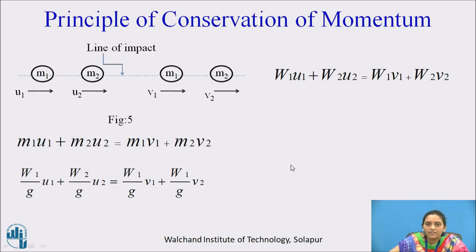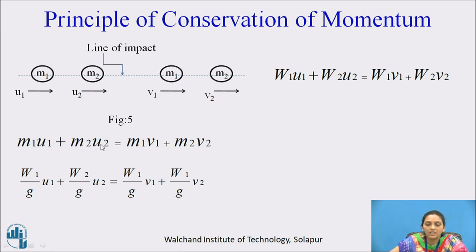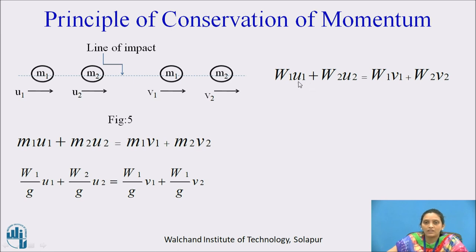In this session, we are learning determination of velocity after impact. After impact there are two unknowns, V1 and V2, so we need at least two equations. One equation is the coefficient of restitution. For a second equation, we use the principle of conservation of momentum: M1·U1 + M2·U2 = M1·V1 + M2·V2. In terms of weight: W1·U1 + W2·U2 = W1·V1 + W2·V2 (after cancelling g).